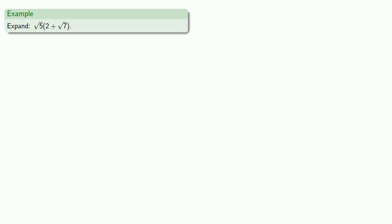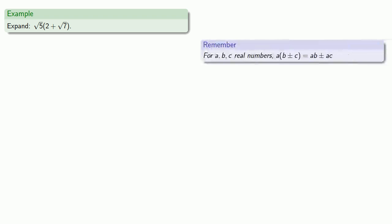So let's say I want to expand square root of 5 times the quantity 2 plus square root of 7. We're dealing with real numbers, so the distributive property applies. I'll distribute the square root of 5 among the two factors, so that's going to be square root of 5 times 2 plus square root of 5 times square root of 7.